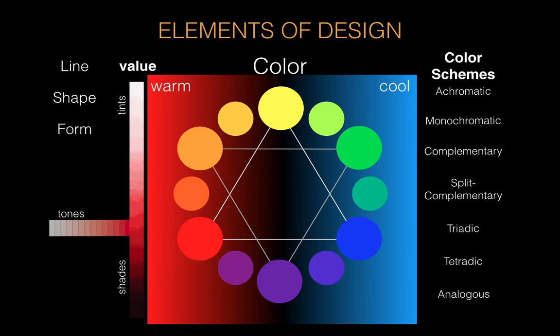Achromatic means essentially grayscale — black and white — using only values, tints and shades, but no chroma. You start to add one color in, and you get monochromatic — 'mono' meaning one, 'chroma' meaning color. That's your typical value scale, shades and tints of any given color.